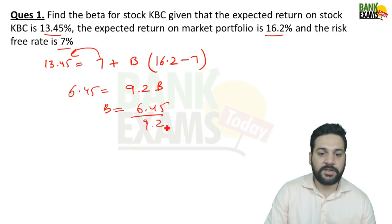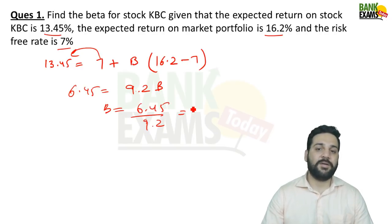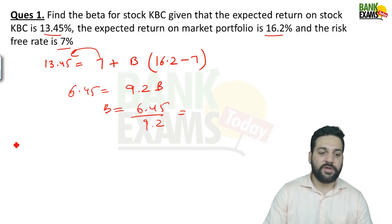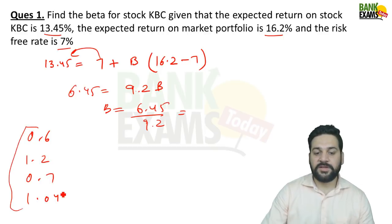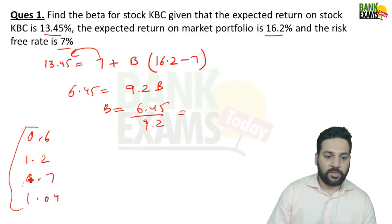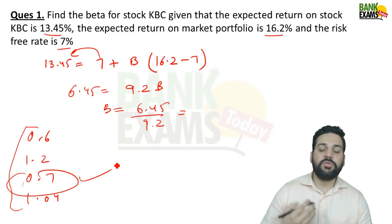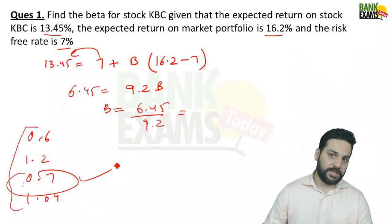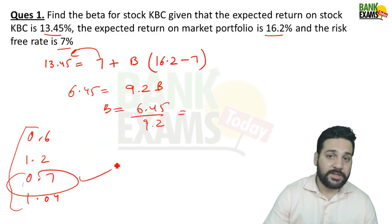In an MCQ paper, you don't need to do the full calculation precisely. If the options are something like 0.6, 0.1, 0.2, 0.7, or 1.04, just do a quick approximation — 6.45 ÷ 9 gives roughly 0.7, so pick that option. There's always a shortage of time in exams, so use approximation smartly.